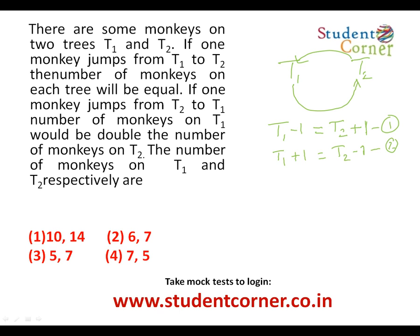In the second condition, after one monkey jumps from T2 to T1, T1 would have double the number of monkeys as T2. So T1 + 1 = 2(T2 - 1) is equation two. This double condition is very important.